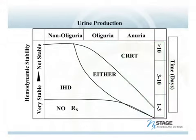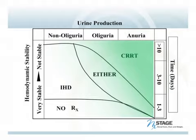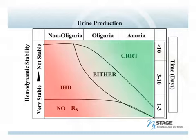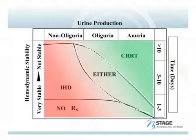If you look at the graph, continuous therapy tends to be used in long-lasting acute kidney injury and in hemodynamically unstable patients. Intermittent therapy may also be used in unstable patients, but generally in the non-oliguric patient and in those with a shorter duration of acute kidney injury.